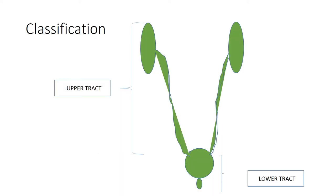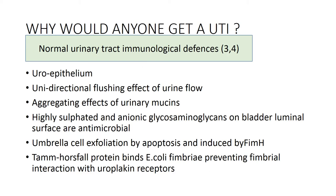Urinary tract infections can be classified anatomically, depending on which part of the urinary tract is affected. When we have urinary tract infections occurring in the kidney or ureter, that's known as upper urinary tract infection — these are associated with systemic features and have a high risk of causing urosepsis. Then we have lower urinary tract infections, which are infections affecting the bladder and the urethra.